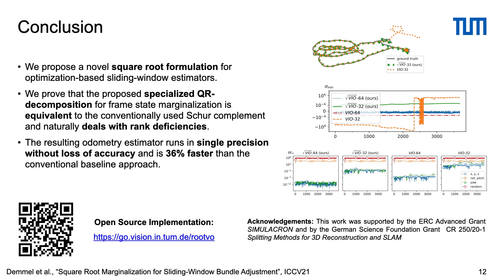In summary, we propose a novel square root formulation for optimization-based sliding window estimators, where our specialized QR decomposition for frame state marginalization is equivalent to the Schur complement. The resulting odometry estimator runs in single precision without loss of accuracy, and is 36% faster than the conventional baseline approach. Thanks for listening, and please visit our project webpage for source code and further details.